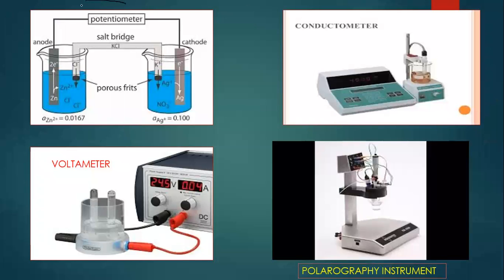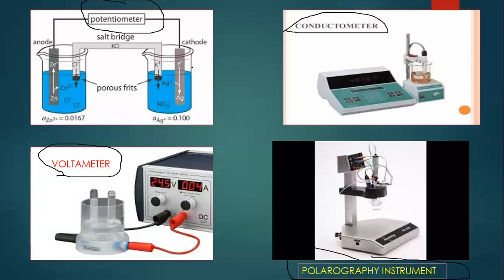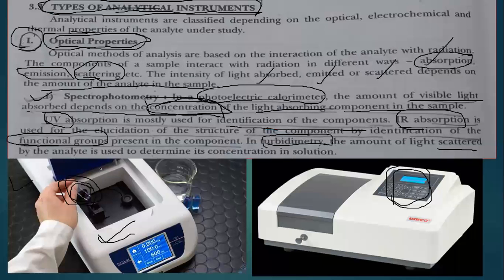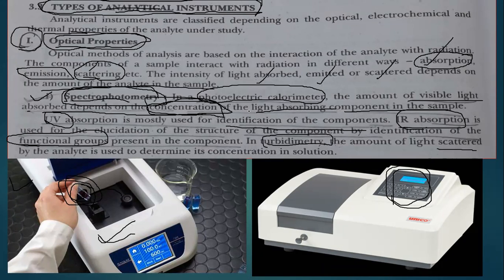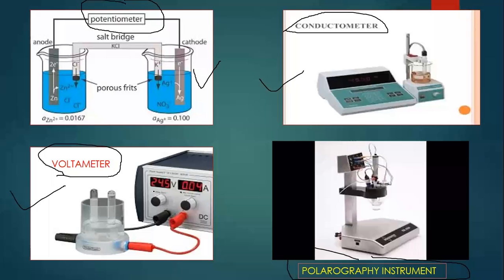In your chemistry laboratory, you will see the potentiometer, conductometer, and voltameter. The polarographic instrument is not there, but these three techniques you are going to study in the chemistry laboratory. The spectrophotometer is there in the research laboratory, and the colorimeter and flame emission spectrometer (FES) are also there. Each and every instrument has its application in our day-to-day life.